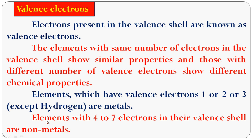Some elements with 4 to 7 electrons in the valence shell — for example, silicon, phosphorus, sulfur, and chlorine — they have 4 to 7 electrons in the valence shell and are called non-metals.